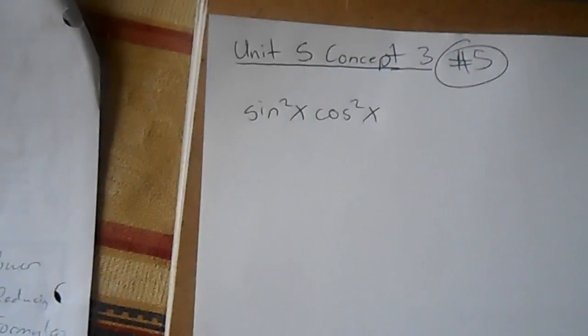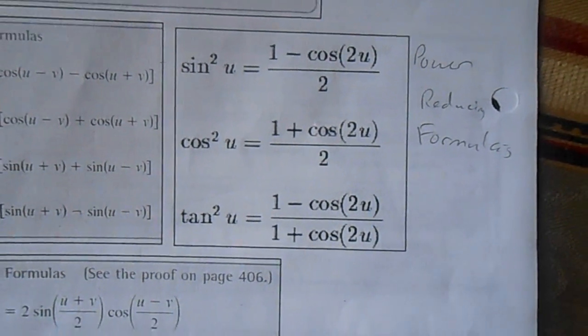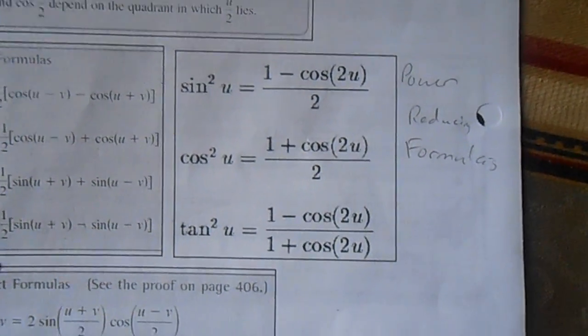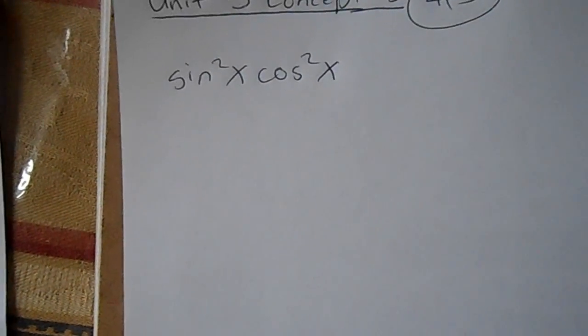To simplify this, we have to use the power reducing formulas that are given to us in the unit S packet, which are these three. But we're not going to use tan²(u) because it's not in the problem.